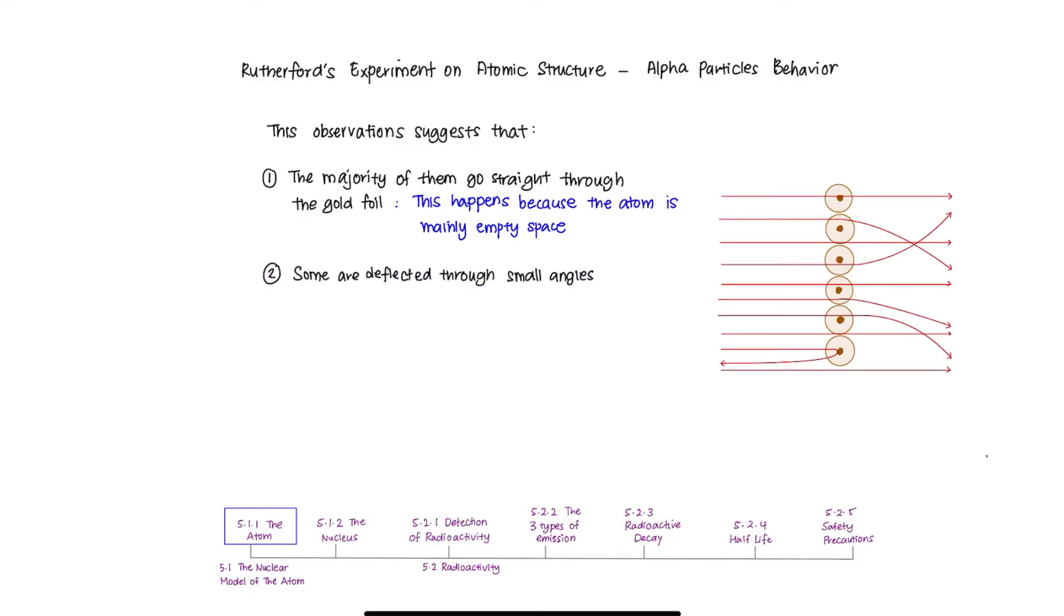When some are deflected through small angles, it tells us that the positive alpha particles are repelled by the positive nucleus, since we learn that like charges repel each other, hence the deflection.